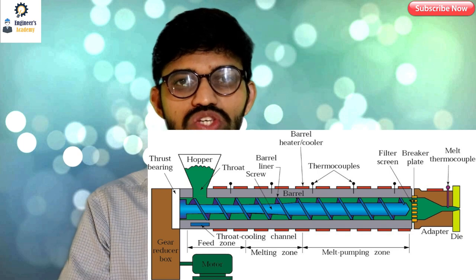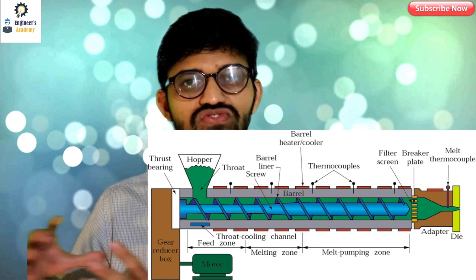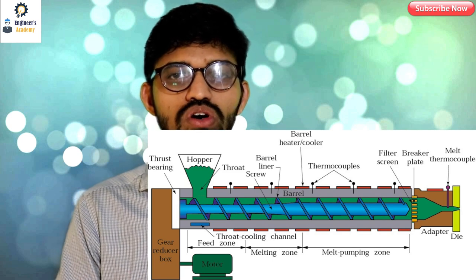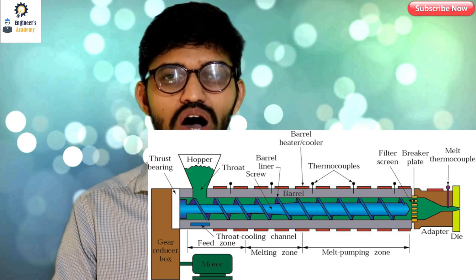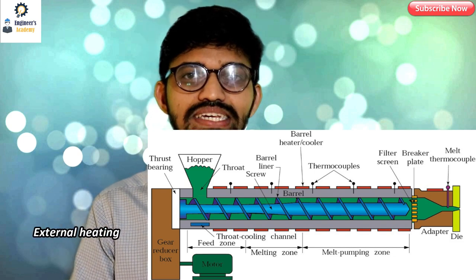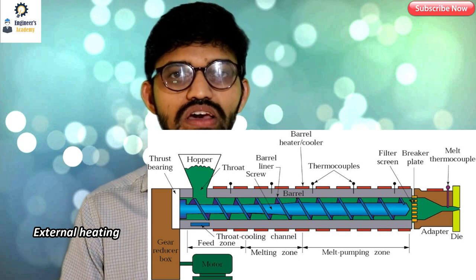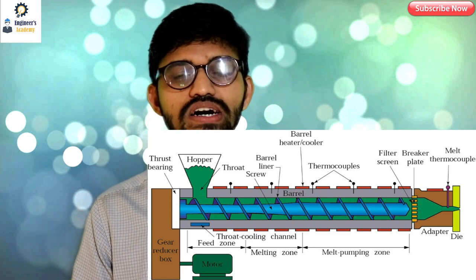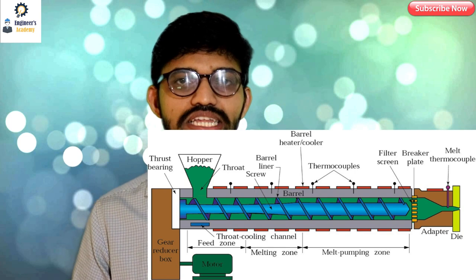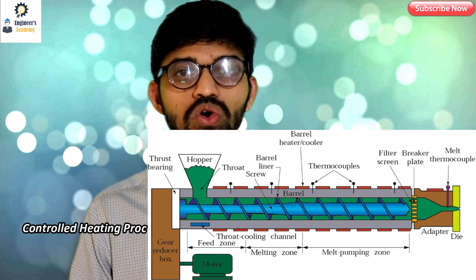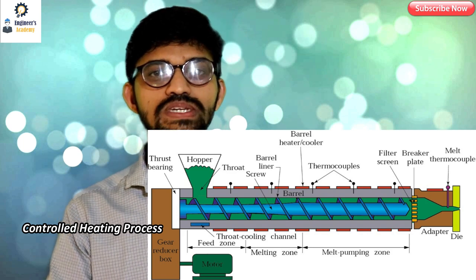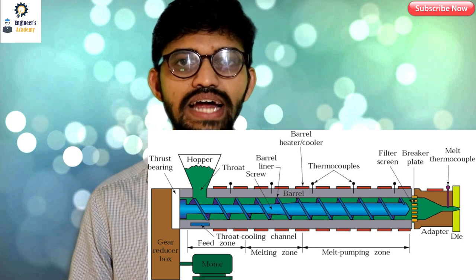The plastic granules are transferred toward the die, but before that they go through the melting process. As the granules move forward, they are melted throughout the cylinder by the application of external heat. This is a controlled heating process — if the plastic gets heated at too high a temperature it will produce unwanted hydrocarbons inside the barrel. The temperature is controlled and sensed by external thermocouples or other sensors.